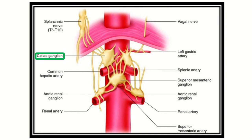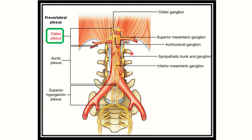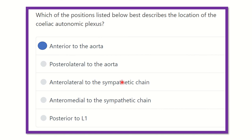In the second picture, we can see the sympathetic plexus on both sides of the vertebra. It is clear that the sympathetic plexus lies more posterior to the abdominal aorta and the celiac plexus. The celiac plexus lies just below the diaphragm, anterior to the abdominal aorta.